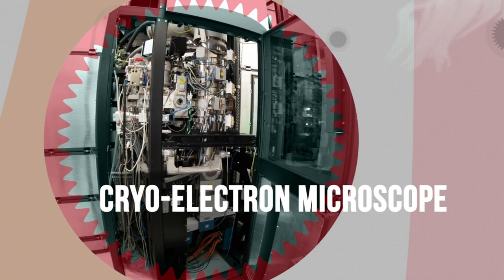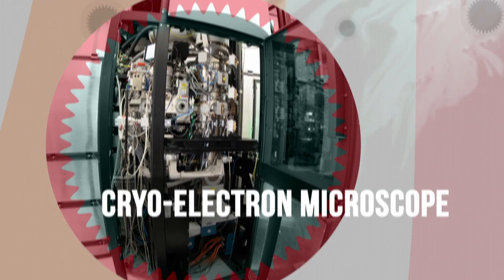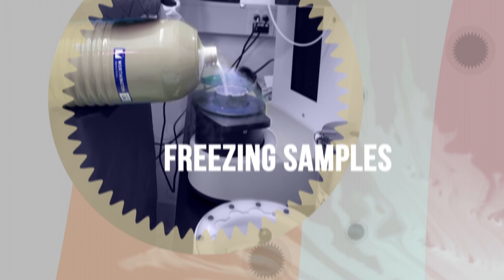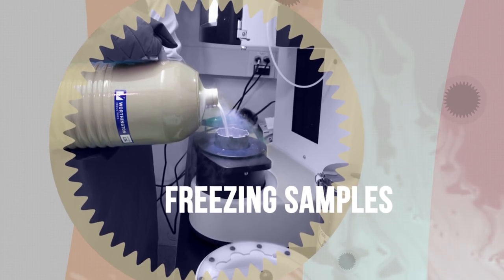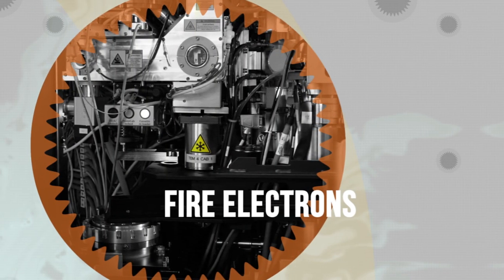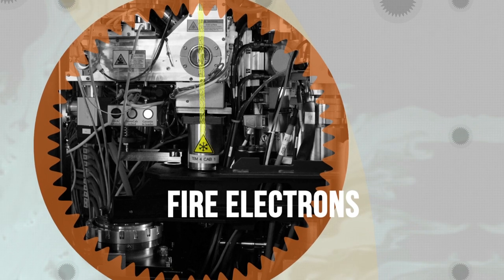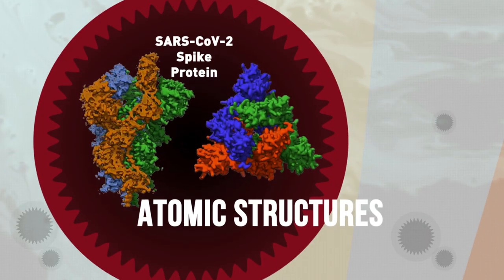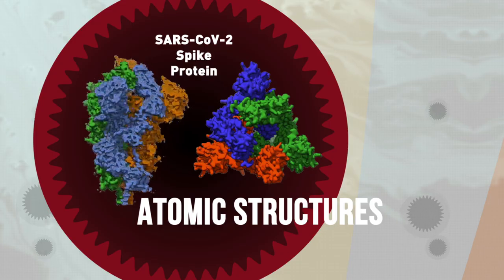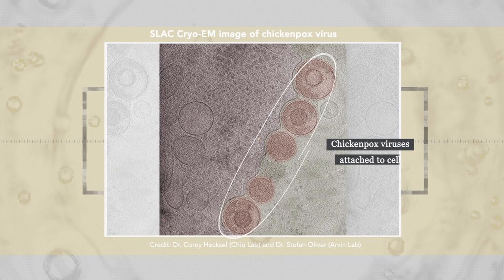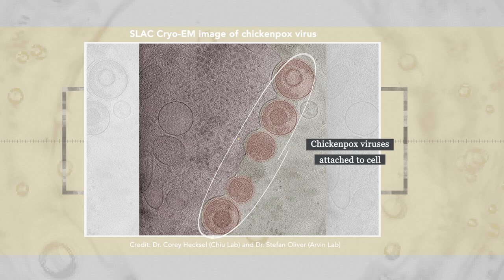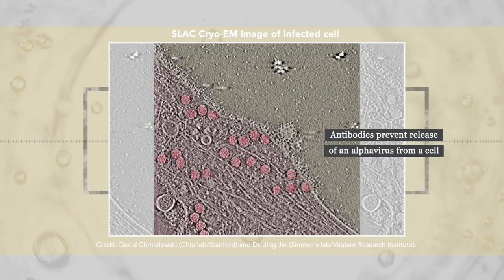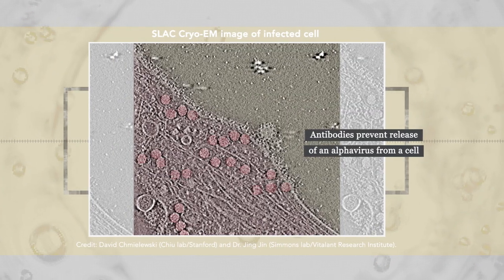With SLAC's cryo-electron microscopes, scientists freeze bits of a virus in place, then fire electrons at them to look at their atomic structures and how those structures bend and twist. They can even look at an entire frozen virus or cell, which can reveal details of how viruses infect cells and what they do once inside.